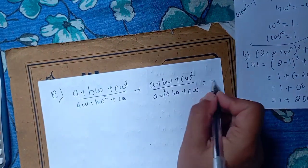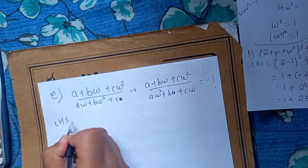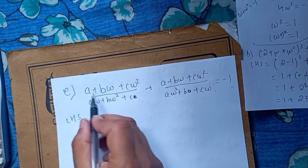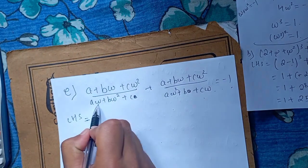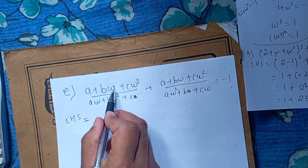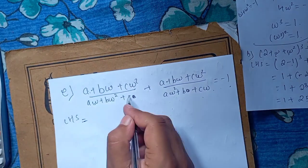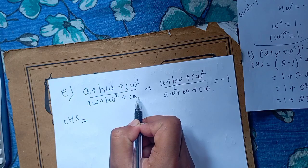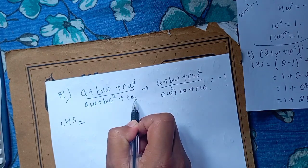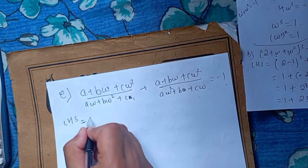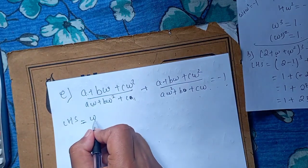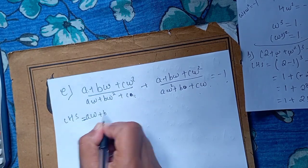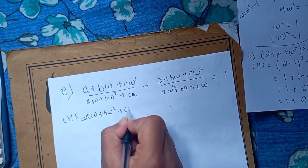This is equal to minus 1. Now we have omega squared here. We need omega squared by omega squared. This here is omega squared. This is omega squared, equal to omega squared. Research is equal and used to be a omega squared plus c omega.